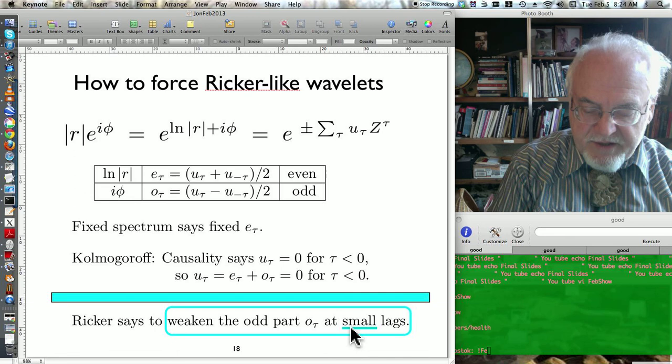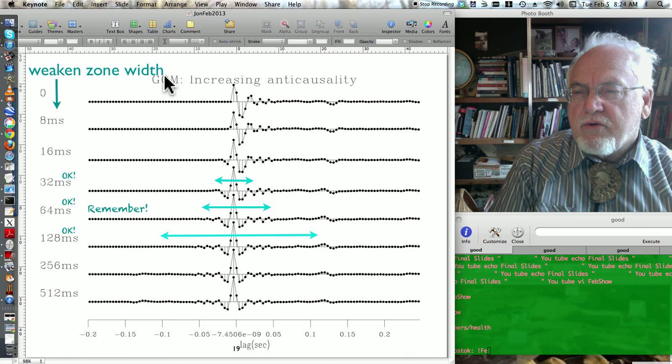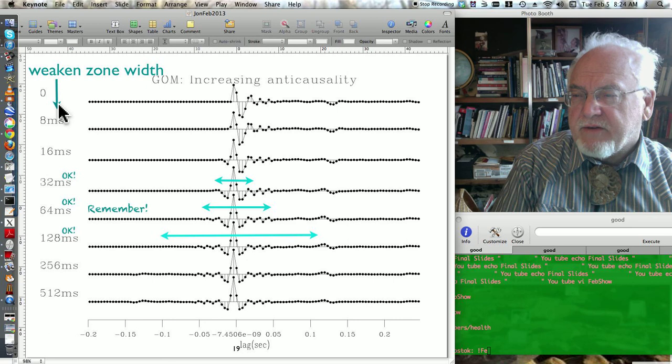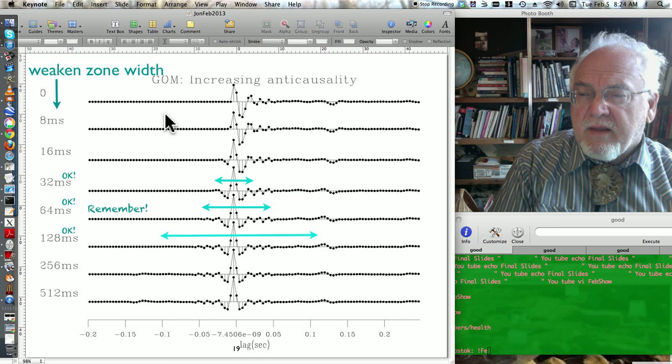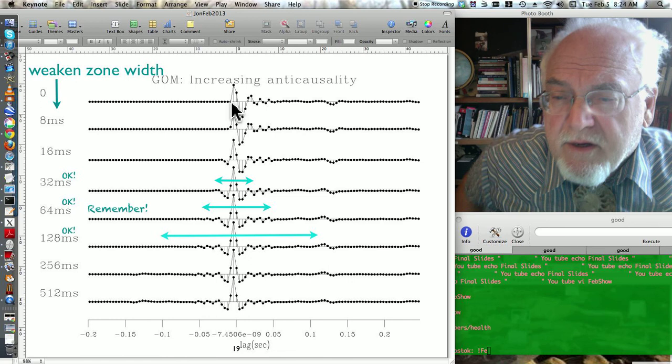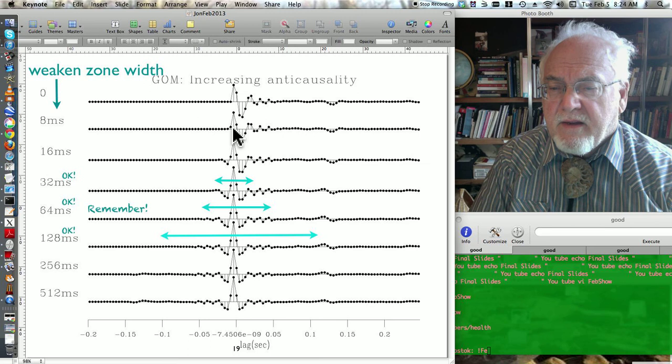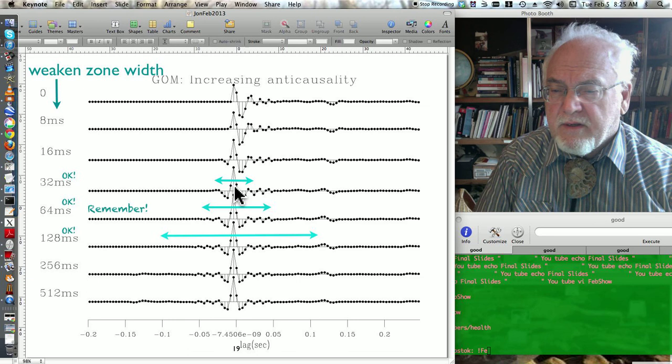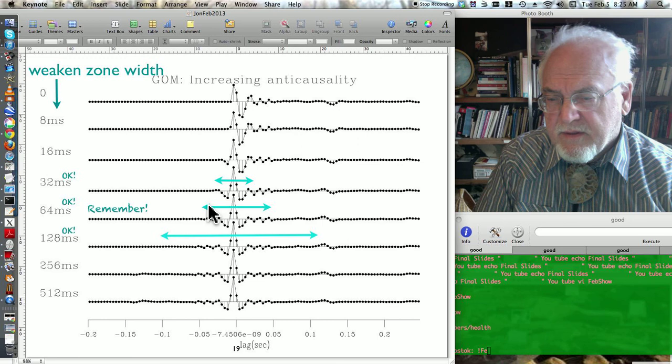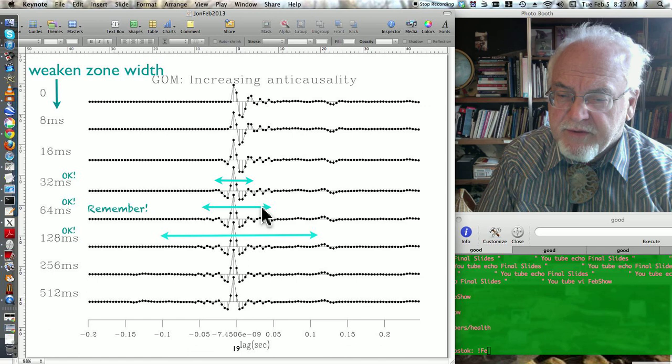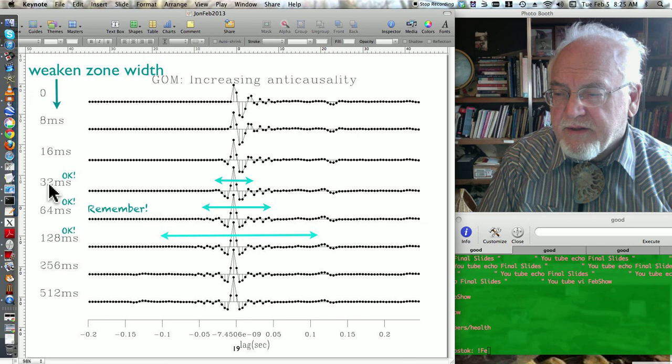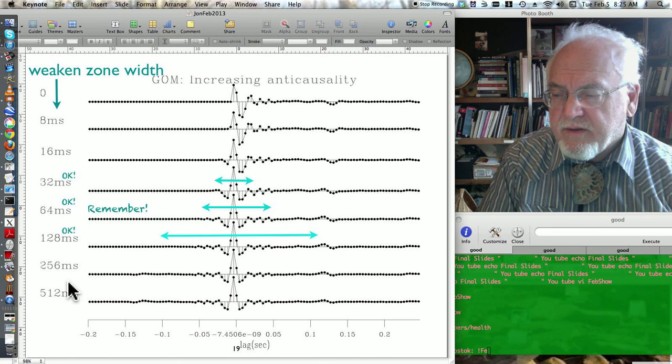You have to choose a width for the zone in which you're going to damp it down. So here we're going to go from zero up to half a second in factors of two. And in the middle here we've got three of them that are pretty good. So we start at the top. This is a causal minimum phase wavelet right here. And we start dampening down the phase near zero lag. And all of a sudden we hit a good one here. This is a pretty good Ricker wavelet once we've damped down 32 milliseconds. Actually damp it down with a sine squared function.